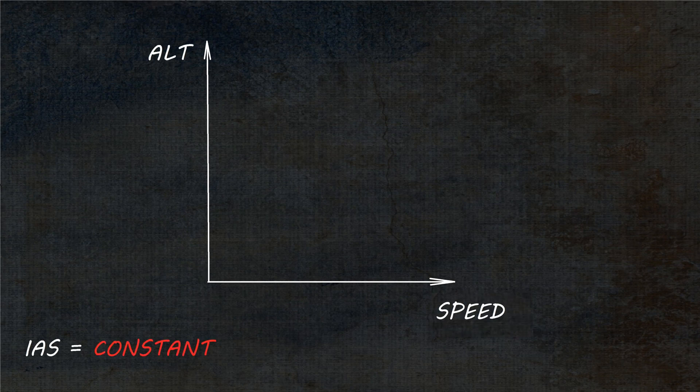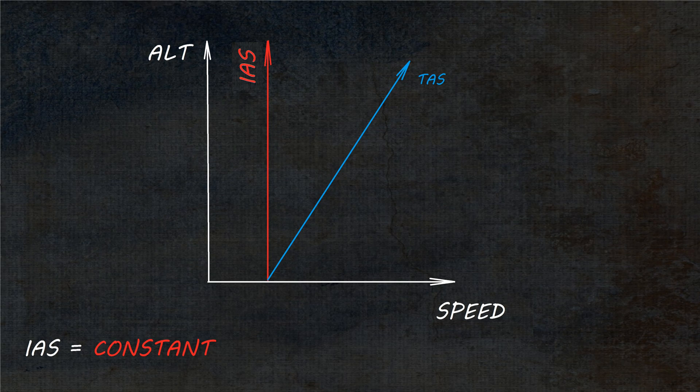As we're climbing, air density is decreasing, and the true airspeed for a given IAS gets higher. So if we climb at the same IAS, the true airspeed is getting higher, meaning the stall speed is getting higher as well. As we're climbing, the margin from below is decreasing, and as you can see on the clips, as we pass through higher altitudes and flight levels, it's getting higher and higher.